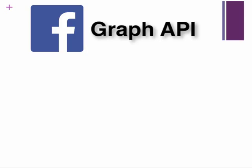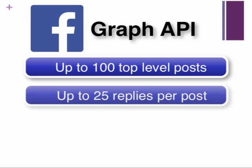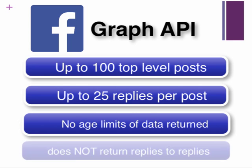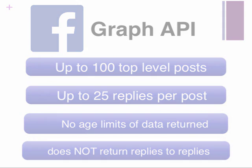Netlytic uses the Facebook API, which returns up to 100 top-level posts to or from a page, as well as up to 25 replies per post. There is no limit on the age of returned posts; however, replies to replies are not included in the collection.